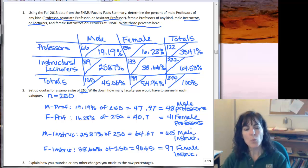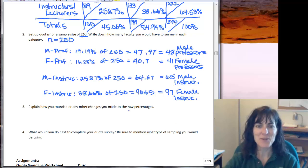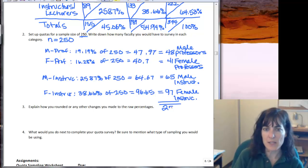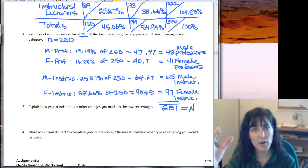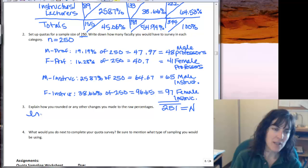Okay, so there's my list. Now explain how you rounded or any other changes you made to the raw percentages. So let's take a look. We know we rounded every single one of them, we had to round up, but I'm curious do we have 250 in our sample now or not. So I'm going to take 48 plus 41 plus 65 plus 97, I get 251. This does not surprise me. 251 is going to be my N, so what I'm going to do is just leave it and say I'm changing my N to 251 because I didn't want to chop off half of a person here.